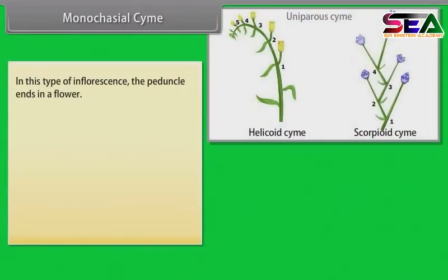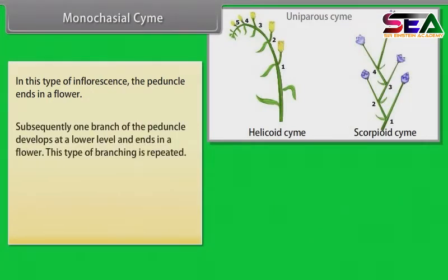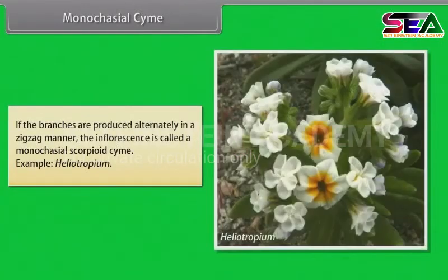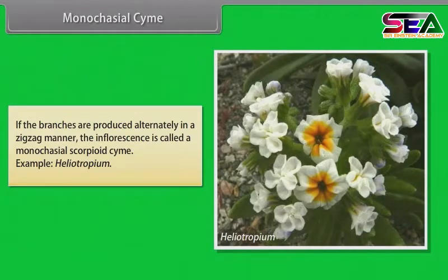In monocasial cyme, the peduncle ends in a flower. Subsequently, one branch of the peduncle develops at a lower level and ends in a flower; this type of branching is repeated. If the branches are produced on the same side, the inflorescence is a monocasial helicoid cyme. Example: Hamelia, Drosera. If the branches are produced alternately in a zigzag manner, the inflorescence is called a monocasial scorpioid cyme. Example: Heliotropium.